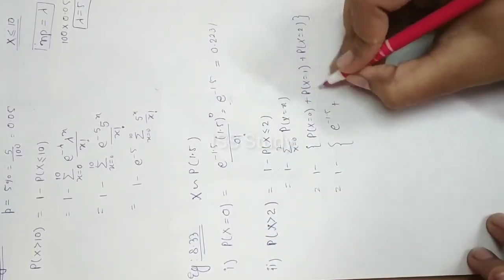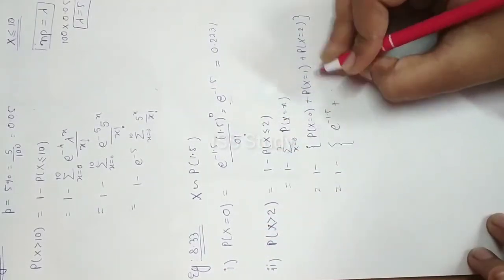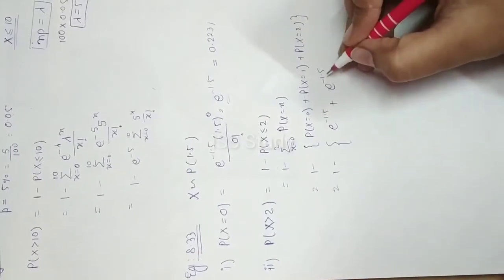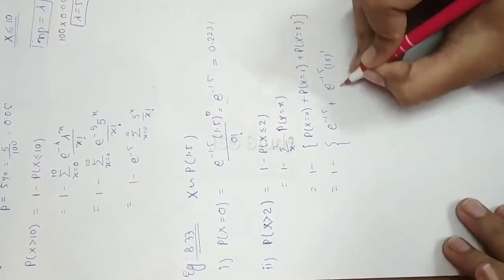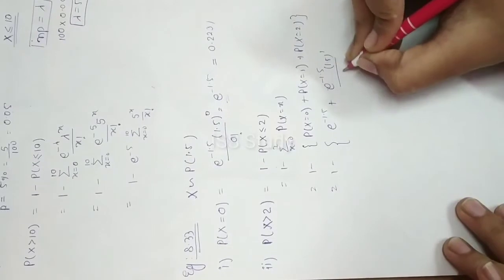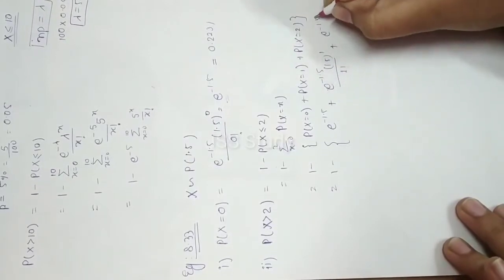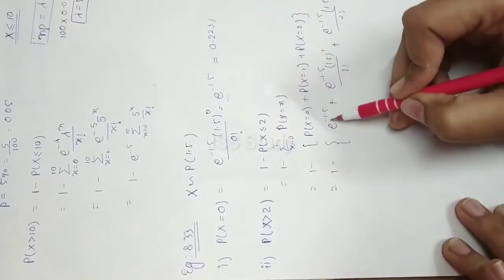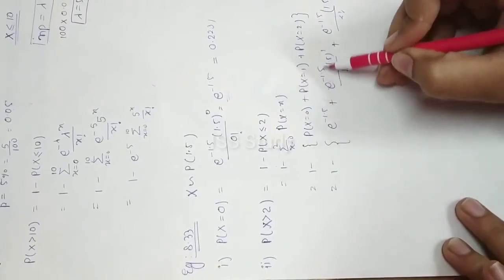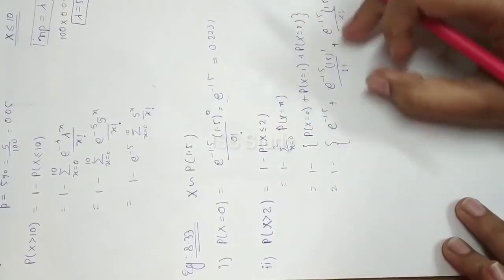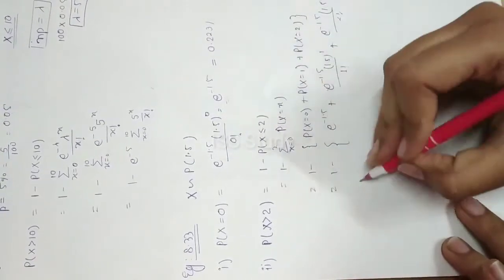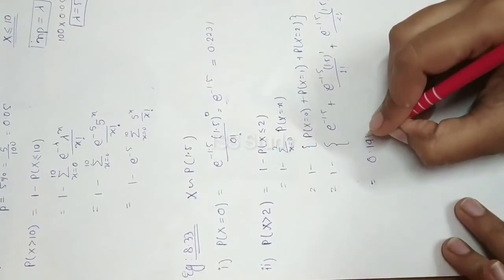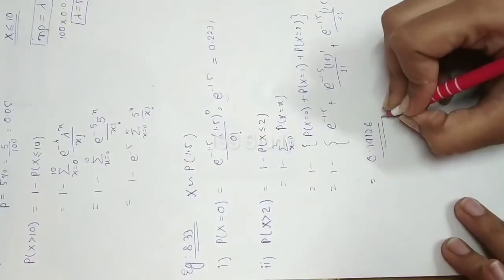For x equals 1, we use e to the power minus lambda times lambda to the power 1 divided by 1 factorial. For x equals 2, it is e to the power minus lambda times lambda to the power 2 divided by 2 factorial. Since e to the power minus 1.5 is common, we factor it out. After calculation, the final answer is approximately 0.1926.